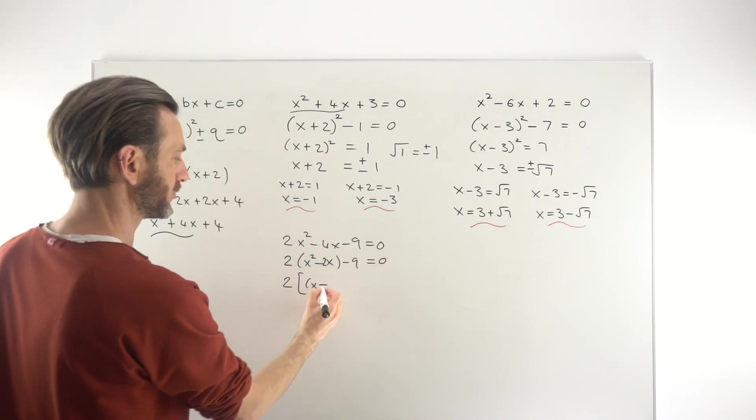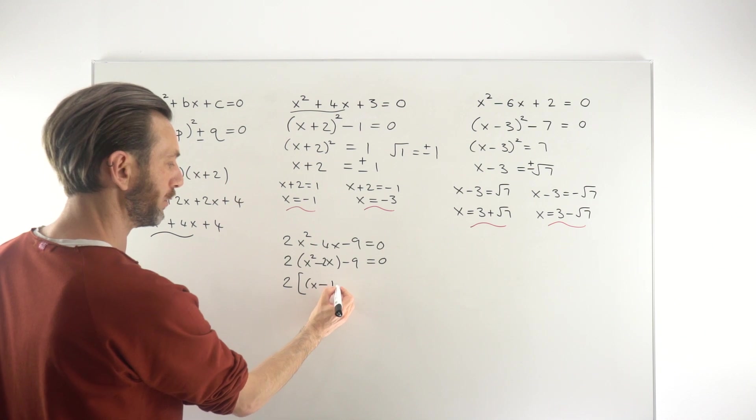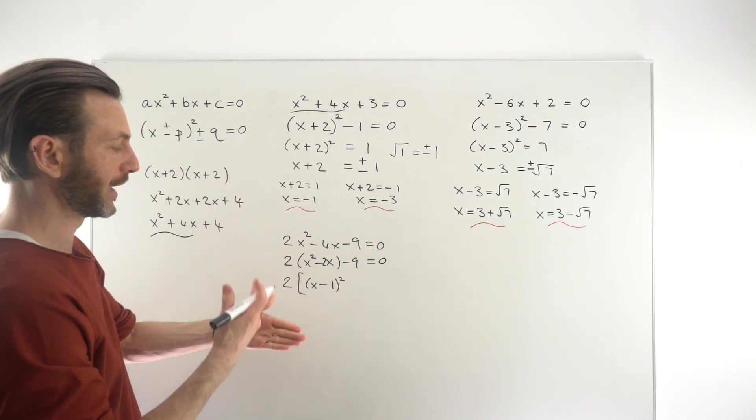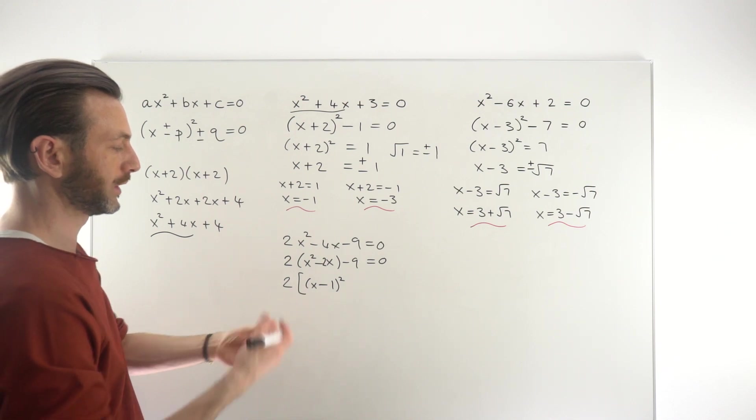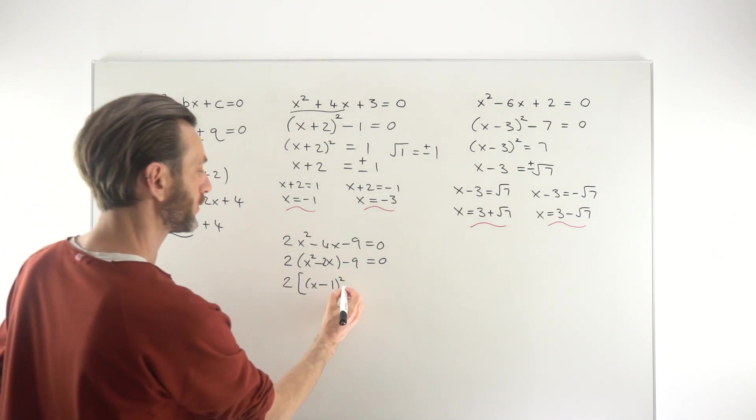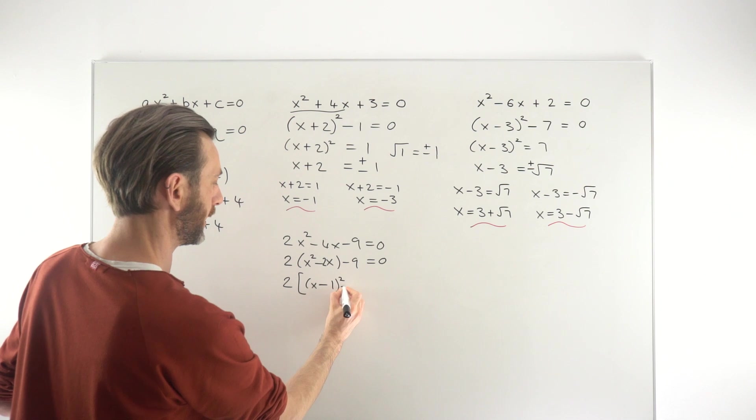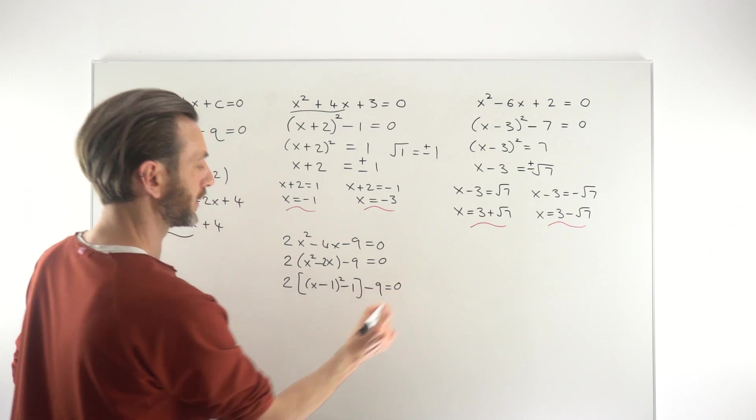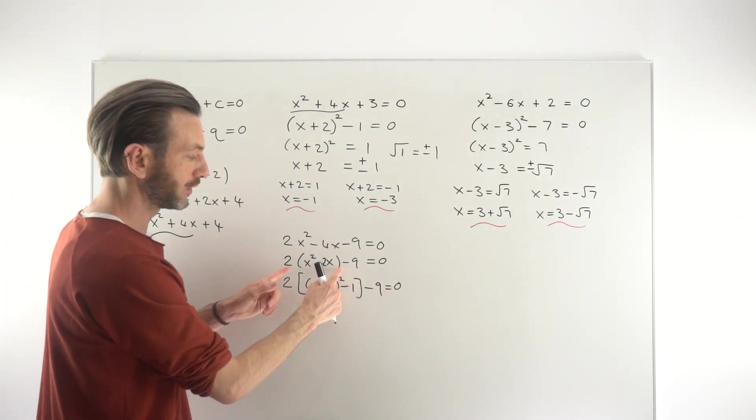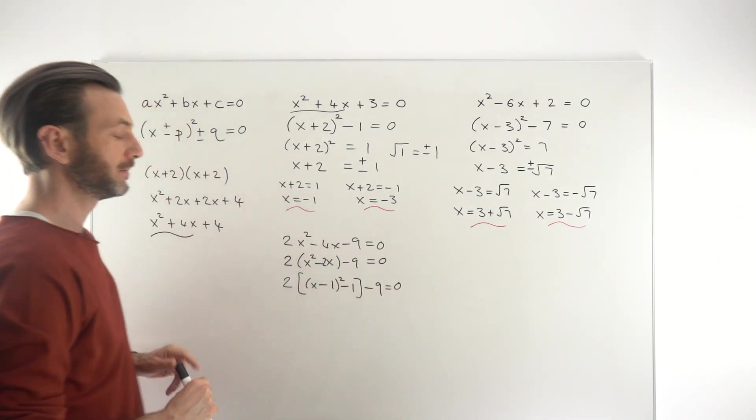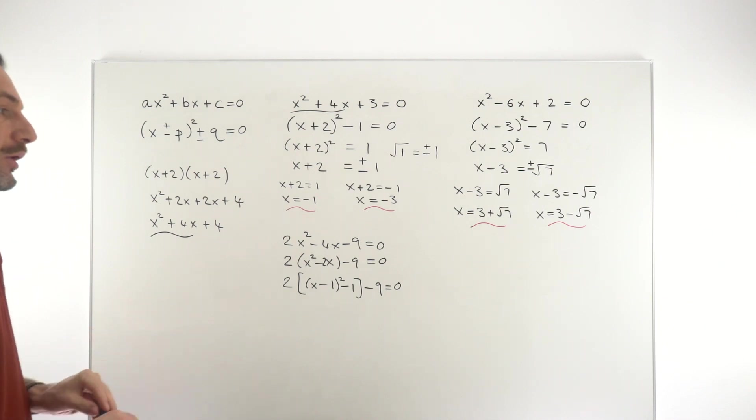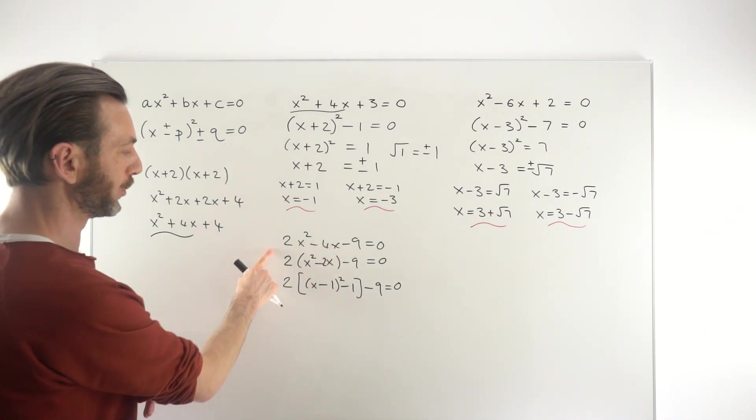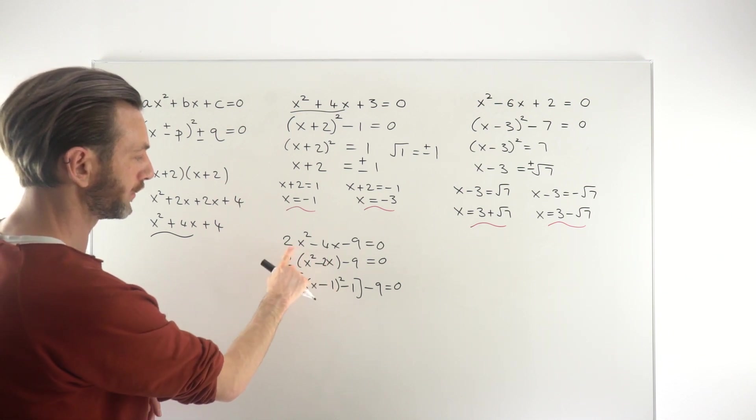What we then do is do completing the square on this bit, which would give us... that should have been a 2 in there, of course, a 2x. So x - 1, and we're still going to take half of that number, which would be 1 all squared. If we were to square that out, we would get a 1 because it's -1 times -1. We don't want that, so we can put a -1 in there. And the -9 stays on the end this time because the -9 was not included in the bracket. But again, I'm going quite quickly with this, but you can fill in the details yourself in another class.